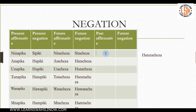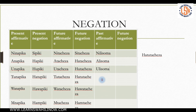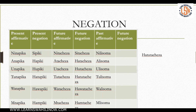Now let's work on the past tense. We'll use the verb 'soma' again. The past tense marker is 'li.' So: nilisoma — I read, alisoma — he or she read, ulisoma — you read, tulisoma — we read, walisoma — they read, mlisoma — y'all read.